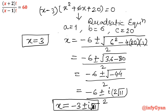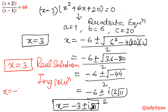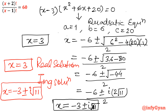So our ultimate solution: x = 3 is our only real solution. If you want the imaginary solutions as well, then x = -3 ± i√11 are the two complex solutions. One solution is real and two are complex. Thank you so much for watching, please do subscribe. Thank you.